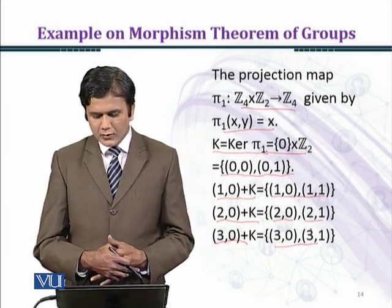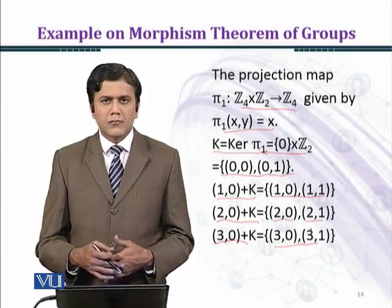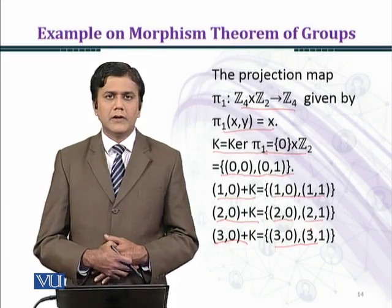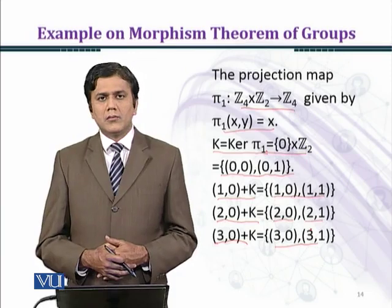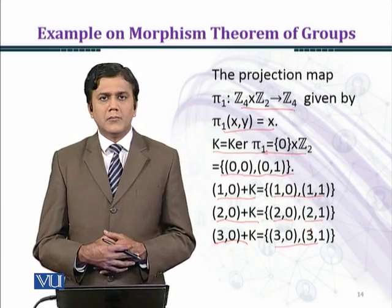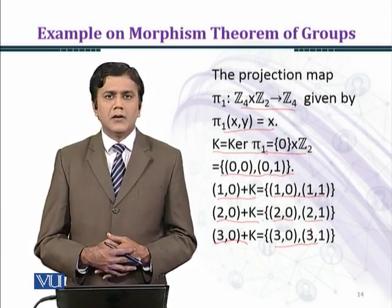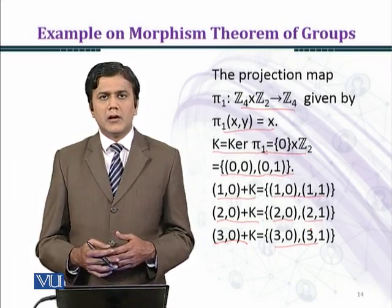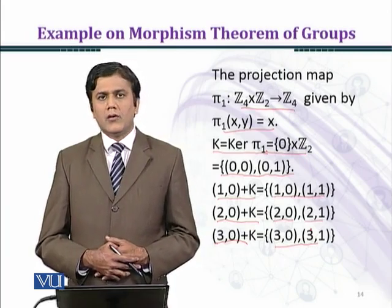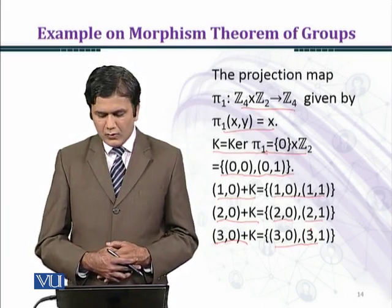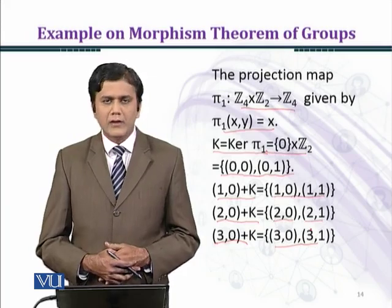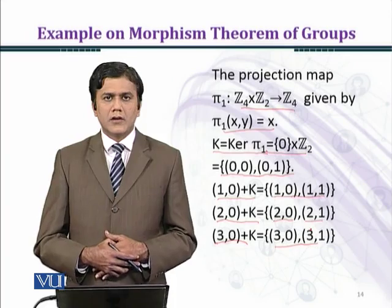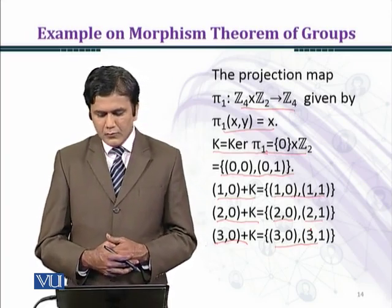You can see easily that all elements in the four disjoint left cosets constitute all 8 elements. This is another view of the same example. Our factor group Z4 cross Z2 over the kernel of pi1 has four cosets, and you can generate all elements from the coset (1,0) + K.